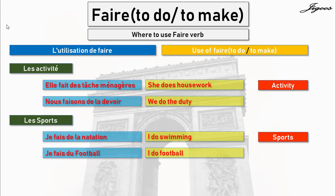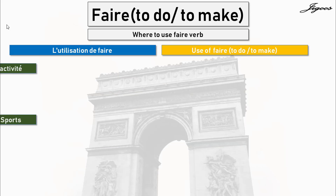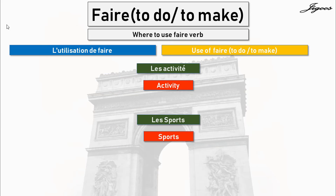Je fais du football — I do football. So faire is used for les activités and les sports. The use of the faire verb is for activity and sports.